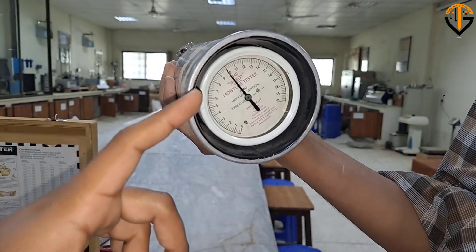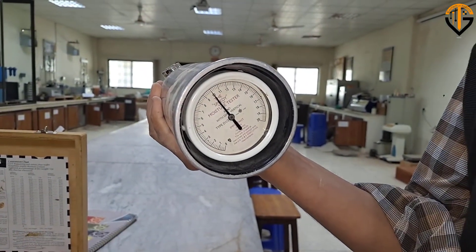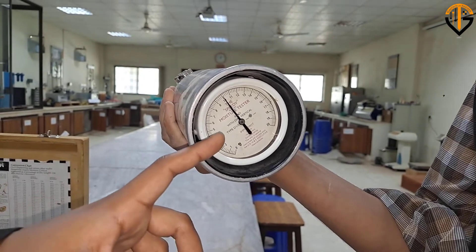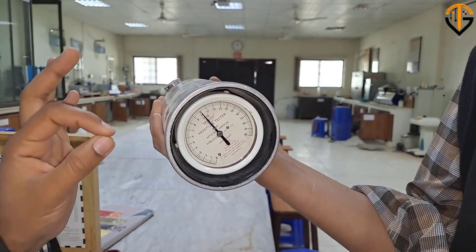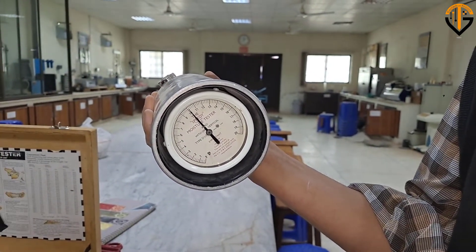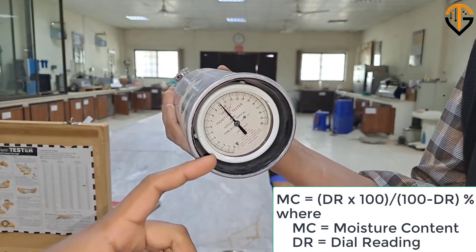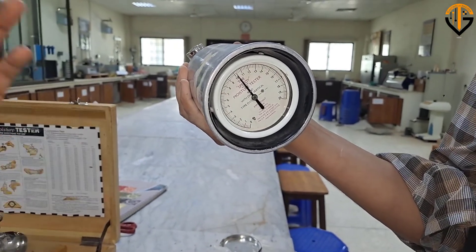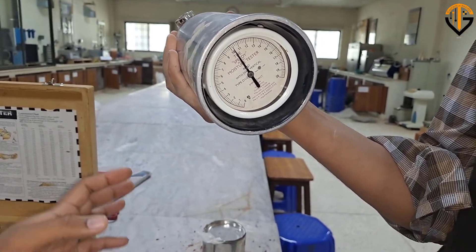We need to note the reading at the point where the dial gauge gets seized and there is no further increment. Here you can see that at 10 percent dial reading there is no change in the value. That value is used in the formula shown on screen to convert the dial reading into moisture content in terms of dry weight. Remember, this test is normally performed on site, but for demonstration purposes we have performed it in this laboratory.